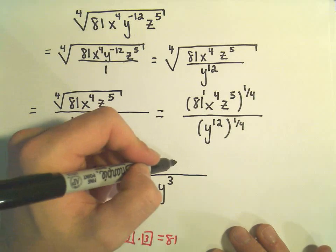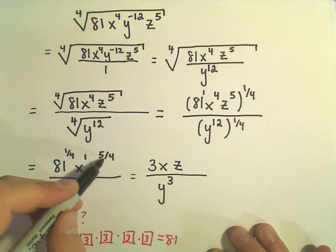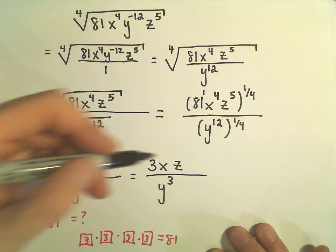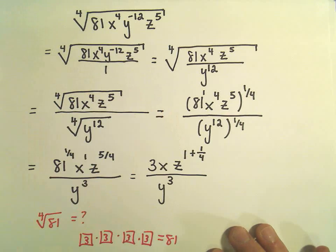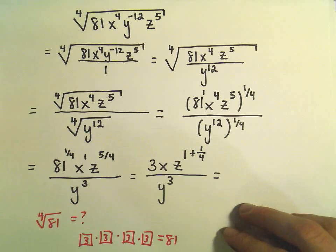What I'm going to do to the z is write the exponent as a mixed number. So I think five divided by four. Well, four would go into five one time with a remainder of one. And then our denominator is just four. So now we're almost there.